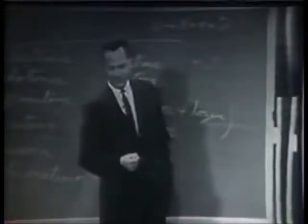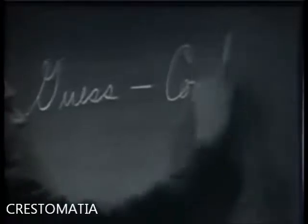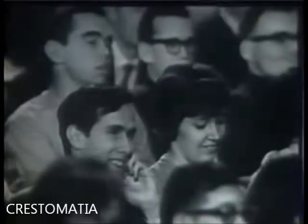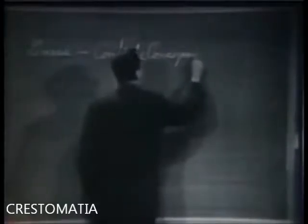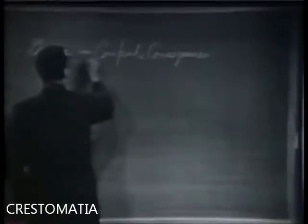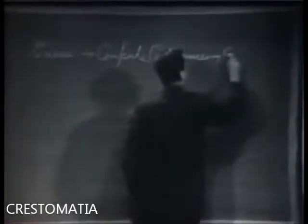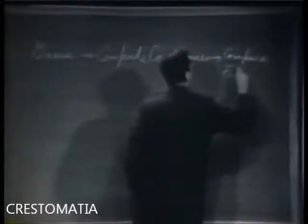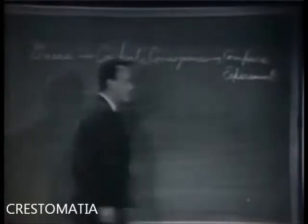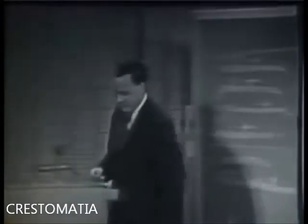Now I'm going to discuss how we would look for a new law. In general, we look for a new law by the following process. First, we guess it. Then we compute the consequences of the guess to see what, if this law that we guessed is right, what it would imply. And then we compare those computation results to nature, or we compare it to experiment or experience. Compare it directly with observation to see if it works.